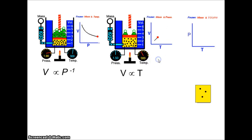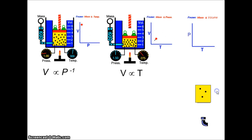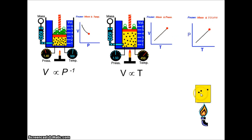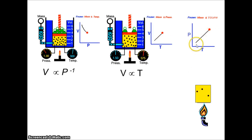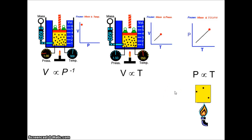And then one more experiment: we keep the mass constant, so there are so many particles in here, and this is a closed container so the volume is constant as well. When we heat up those particles, the temperature increases, and as the temperature increases, the pressure increases — hopefully the can doesn't explode on us. So that's a direct relationship.